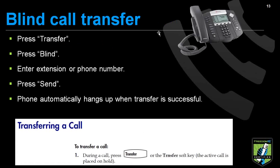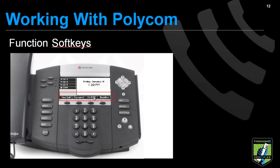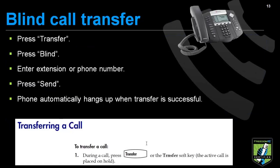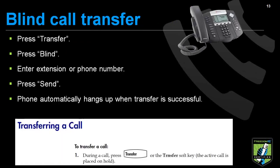For a blind call transfer — which means sending the call to another extension without interacting with that extension — you simply start with a live call, press the transfer button, hit the blind button, enter the extension or phone number, and then press send. This can be an internal extension, an external phone number, or an internal phone number. Once you press that send button, the phone is going to hang up and the caller will go to the extension or phone number you sent them to. The transfer button is available both as a function soft key and as a hard key on the phone.